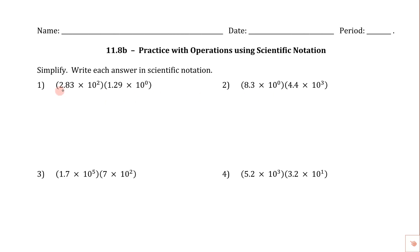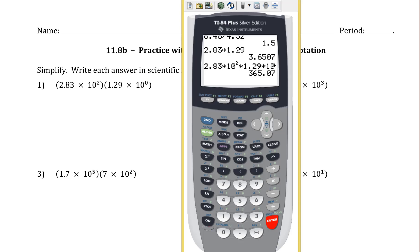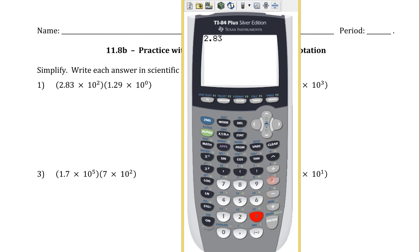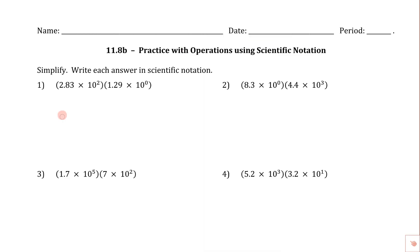If we take a look at number one, we've got 2.83 times 10 to the second times 1.29 times 10 to the zero. Now you may remember what 10 to the zero is, and that might be kind of helpful here. Let's go ahead and do this in the two-step process that we learned before. We're going to multiply 2.83 times 1.29, and we get 3.6507.